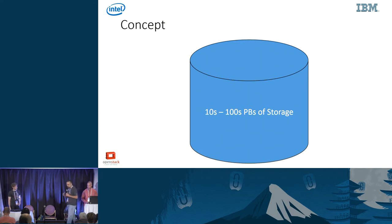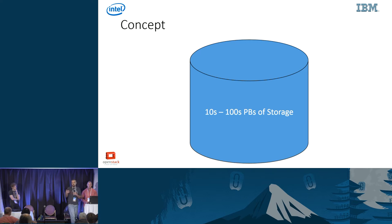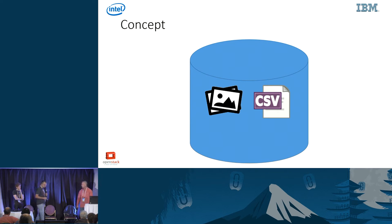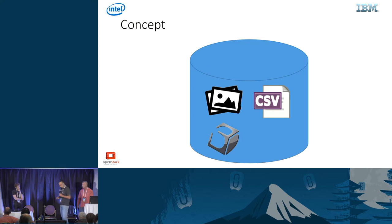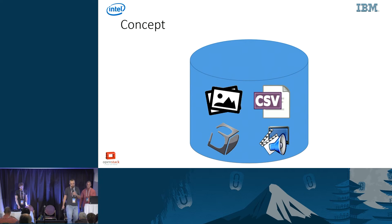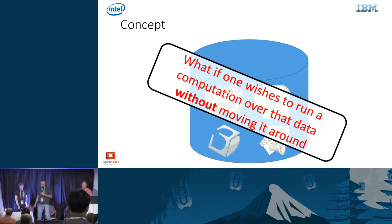So the concept. Imagine you have a storage system that can hold many petabytes of storage, and the system is being used as a service. What would people put there? Their photos, their IoT data — archived IoT data in the format of CSV files — their 3D designs, and their digital media files, which are huge files usually. Now what happens if one wishes to do some computation over their data without moving it around?